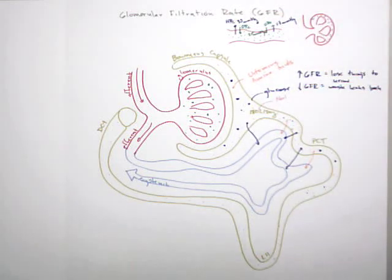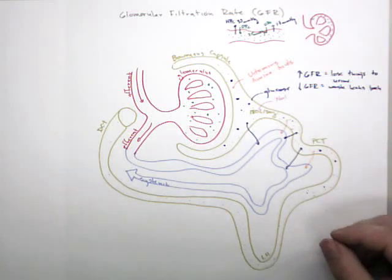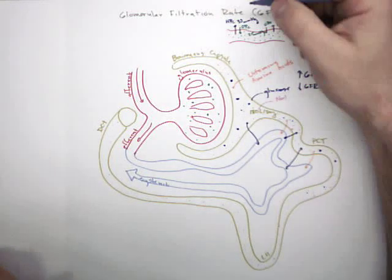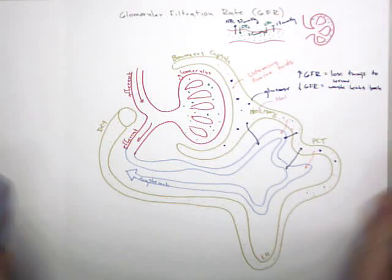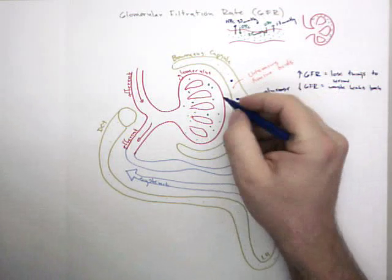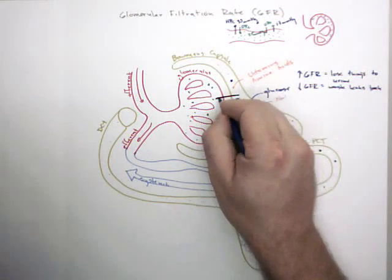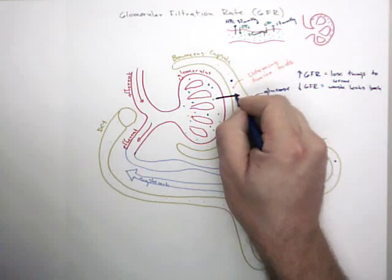The same kind of pressures are working in the glomerulus. There are three pressures technically. The first pressure is something very similar to HPC, and it's essentially blood pressure. In the glomerulus, it's called HPG.